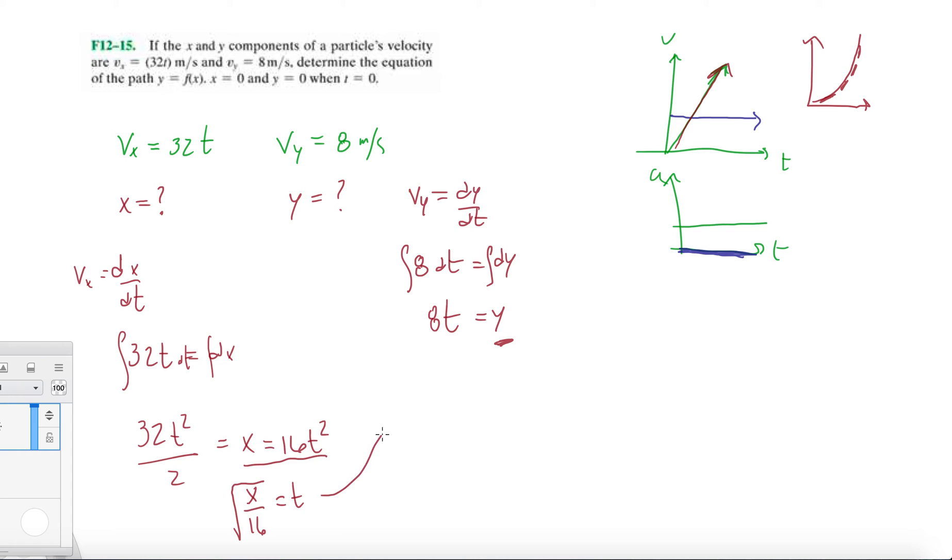And then substitute it into the y equation. So ultimately, we get y equals 8 times the square root of x over 16, which is 8 square root of x over 4, which is ultimately equal to 2 times the square root of x.